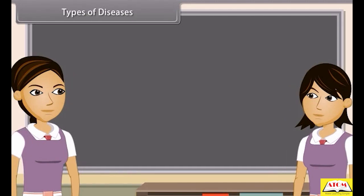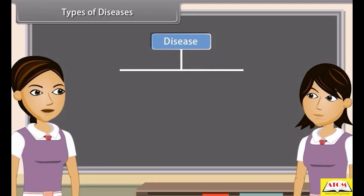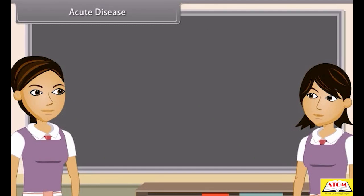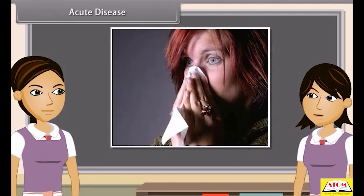Can you tell me how many types of diseases are there? Yes, human diseases are grouped into four categories: acute, chronic, congenital and acquired. Acute diseases are those whose effects come on suddenly and affect the body quickly. Example: influenza.